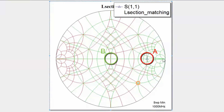There is more than one way to go from one point on the Smith chart to another. You can carry out your match using different techniques, different numbers of elements, and different types of elements. For example, instead of moving down a constant conductance circle initially, we could have moved up a constant conductance circle by adding an inductor in shunt, then added a series capacitor to move down to the centre of the chart.